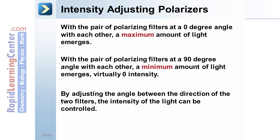So, by adjusting the angle between the direction of the two filters, between zero and 90 degrees, the intensity of the light can be controlled.